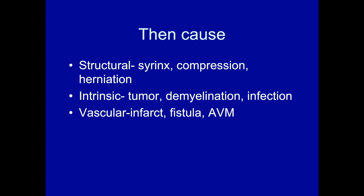You need to think about causes of myelopathy together with compartment. Structural causes include spinal cord syrinx, compression, and herniation. Intrinsic disease of the cord includes tumor, demyelination, and infection. You also need to keep in mind vascular malformations — an interruption of blood flow to the spinal cord from an infarct, an arteriovenous fistula, or an arteriovenous malformation, which is much less common.